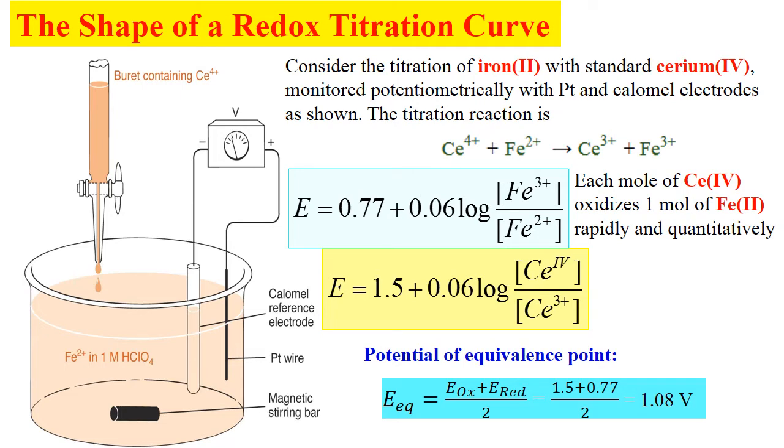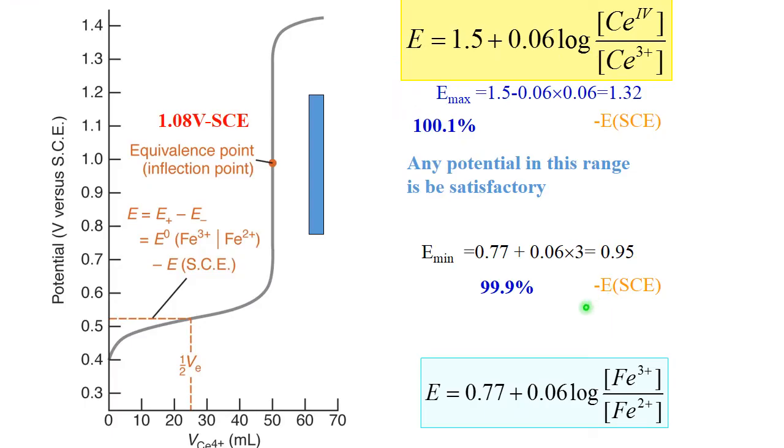At the beginning of titration, we have only Fe3+ and Fe2+ ions. Because all cerium 4 will convert into cerium 3+ and you'll see very little cerium 4 left in solution. So, redox potential will be determined by Fe3+ and Fe2+ pair.